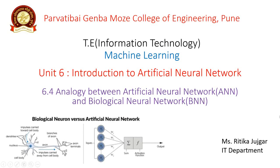Hello everyone, I am Hrithika Zuzgar, assistant professor in the IT department. In the course of machine learning we started unit 6. In that we discuss what is meant by neural network and the two fundamental concepts used: the artificial neural network and the biological neural network. In the previous video we already discussed these concepts — you can check the ANN and BNN content in the description box.